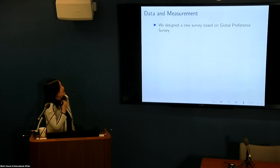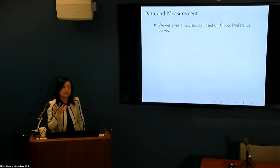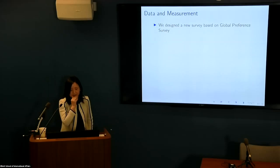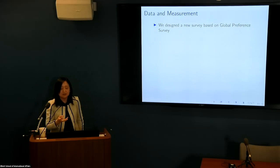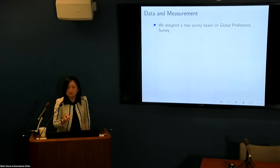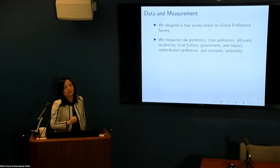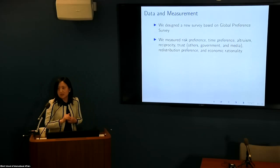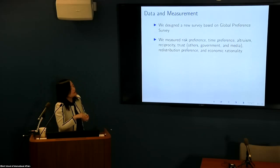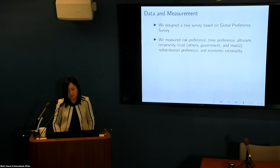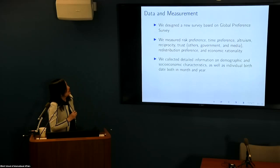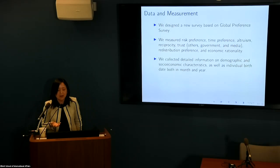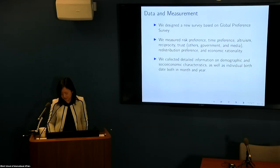How do we measure? A big challenge with China is where the data comes from. We actually designed and collected the data ourselves with a team at Virginia Tech. We designed a new survey on Chinese preferences based on the well-known Global Preference Survey, collecting data on individuals' risk preference, time preference, altruism, reciprocity, trust of others, trust of government, trust of media, redistribution preferences, and economic rationality. We also collected detailed demographics and socioeconomic characteristics, including birth date, which is important for our identification.